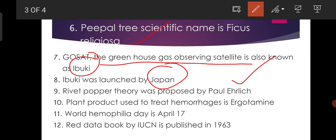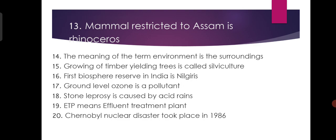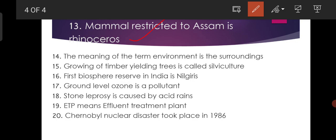Plant product used to treat hemorrhage is ergotamine. World Hemophilia Day is April 17th. Red Data Book by IUCN was published in 1963. The mammal restricted to Assam is Rhinoceros. The meaning of the term environment is the surroundings. Growing of timber-yielding trees is called silviculture. The first biosphere reserve in India is Nilagiris.